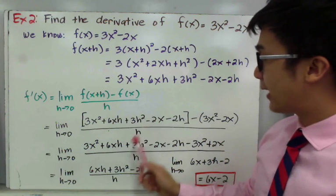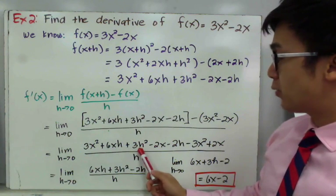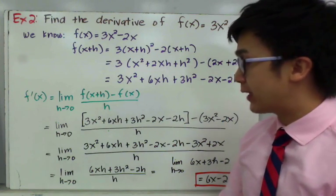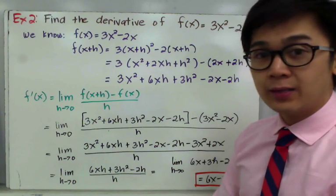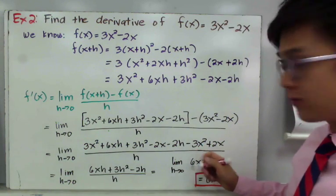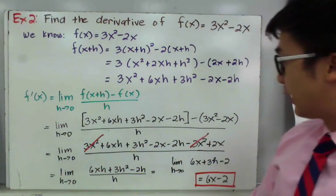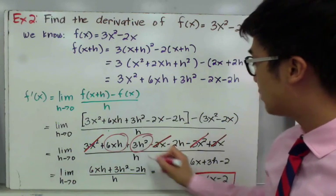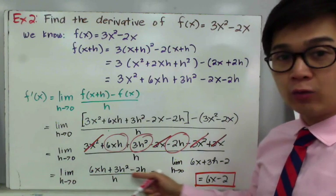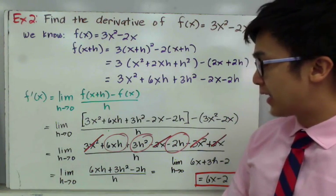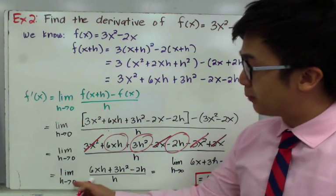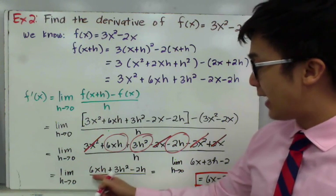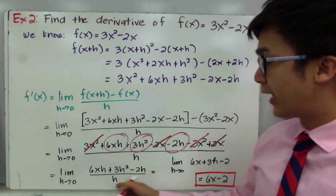By simplifying the numerator, we distribute the negative sign to get 3x squared plus 6xh plus 3h squared minus 2x minus 2h minus 3x squared plus 2x. We then combine like terms: 3x squared and negative 3x squared cancel out, and negative 2x and positive 2x cancel out, leaving us with 6xh plus 3h squared minus 2h. So we now have the limit of 6xh plus 3h squared minus 2h, all over h. Since we can factor out h from each term, we are left with 6x plus 3h minus 2h after canceling h.